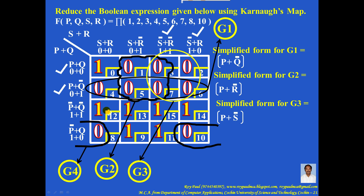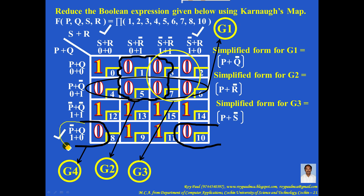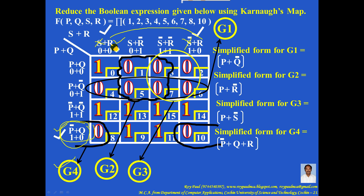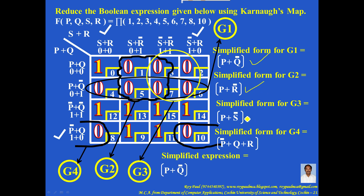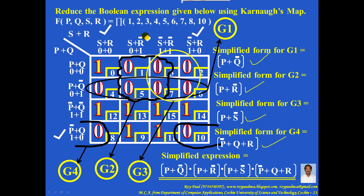Finally, let me simplify G4. For every zero, mark the left-hand side and the top. The LHS contains only one term — take it as is. On the top, the stable variable is R, because S changes state from S to S complement. So the simplified form for G4 is P complement plus Q plus R. Now, PI means it is product, so the final simplified expression is obtained by multiplying all these terms together. This is the simplified form of the boolean expression in PI format using KMAP.